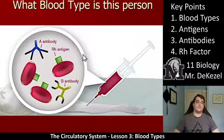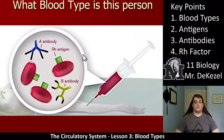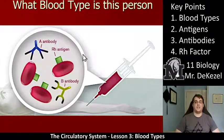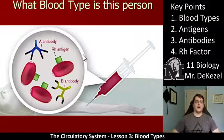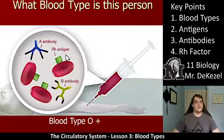And the last one: we have blood cells with the RH antigen only on them — there are no A or B antigens. When we have no A or B antigens, that's blood type O. It is RH positive, so that's O positive.